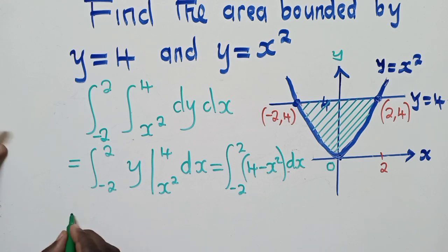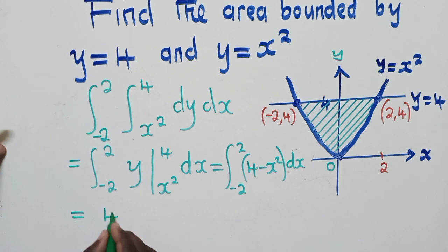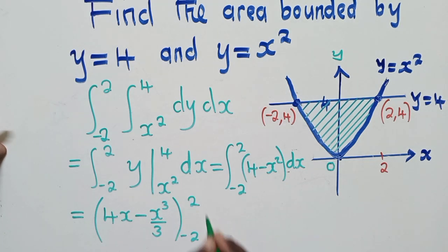So now this time around, we are respecting x. So we're going to say equal to, we integrate here, it will be 4x minus x power 3 over 3. And then the limits, lower limit, it's a 2. Upper limit, it's also a 2.